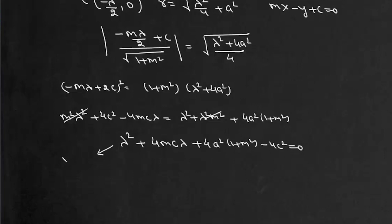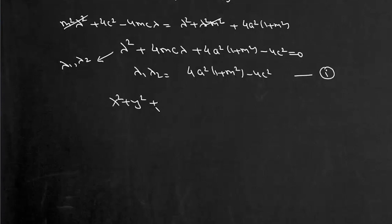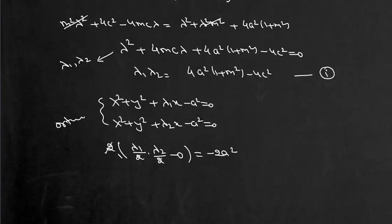We need two such circles with parameters λ₁ and λ₂. From the quadratic, the product λ₁λ₂ = 4a²(1 + m²) - 4c². For the two circles x² + y² + λ₁x - a² = 0 and x² + y² + λ₂x - a² = 0 to intersect orthogonally, the condition 2g₁g₂ + 2f₁f₂ = c₁ + c₂ gives 2·(λ₁/2)·(λ₂/2) = -2a², so λ₁λ₂ = -4a².